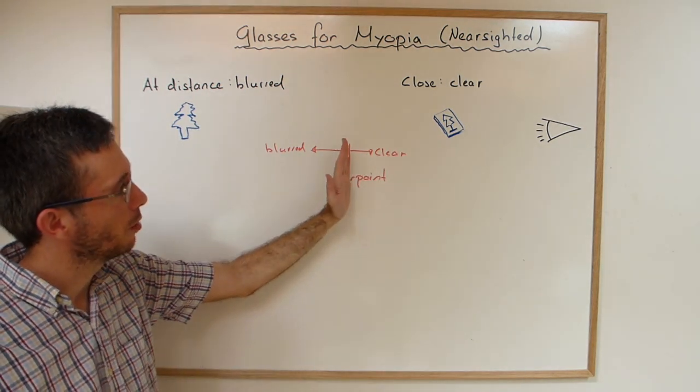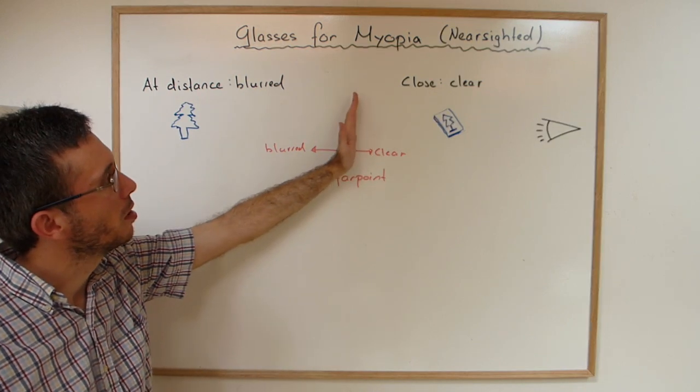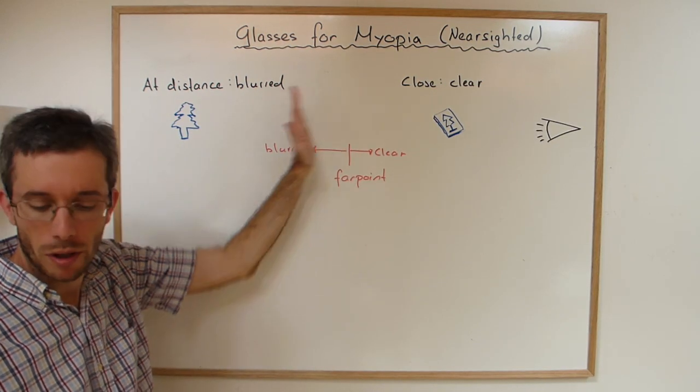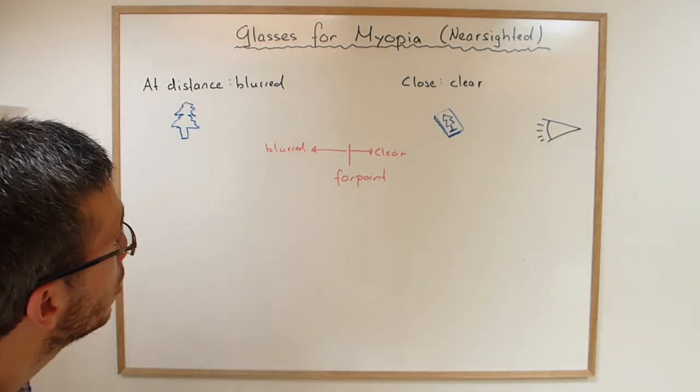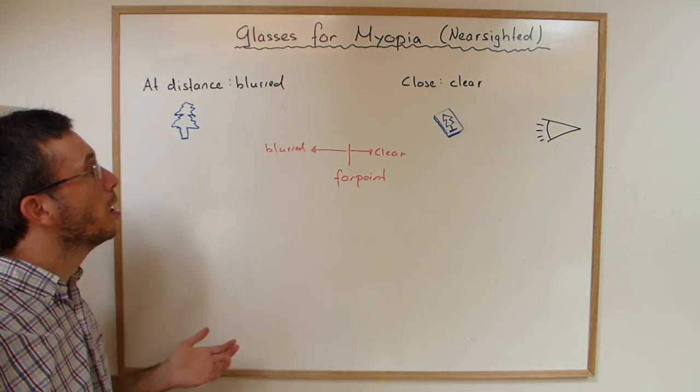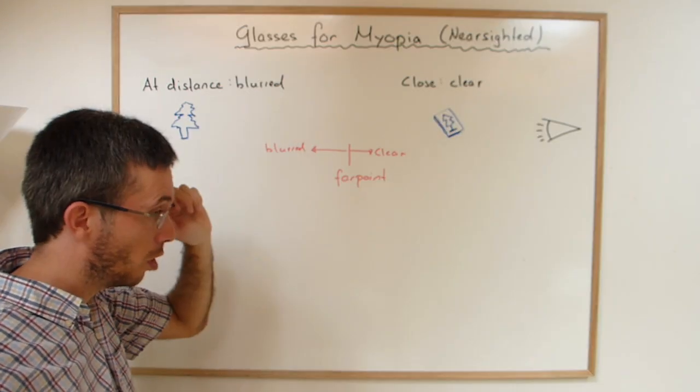And there is one point that we call the far point. Up to this point you can see everything clearly, further on you can't. So the first step when calculating glasses for somebody that has myopia is to ask them, what is your far point?